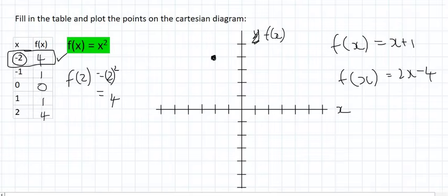Next is the point minus 1 and 1, so that's minus 1 and then 1 up—a little dot there. Then 0 and 0, which is right at the center, the origin. Then 1 and 1, so that's 1 to the right and 1 up. And then 2 and 4, so that's 2 to the right, then 4 up: 1, 2, 3, 4.